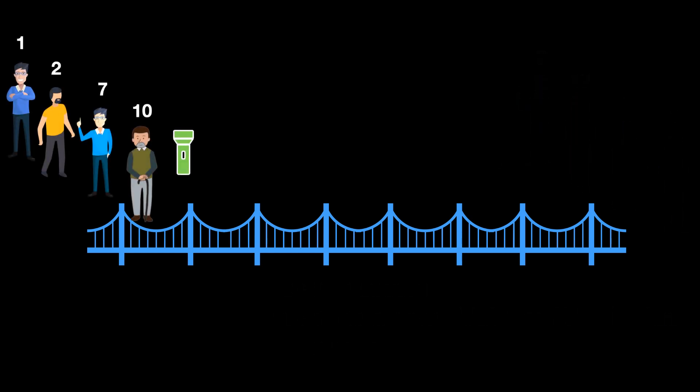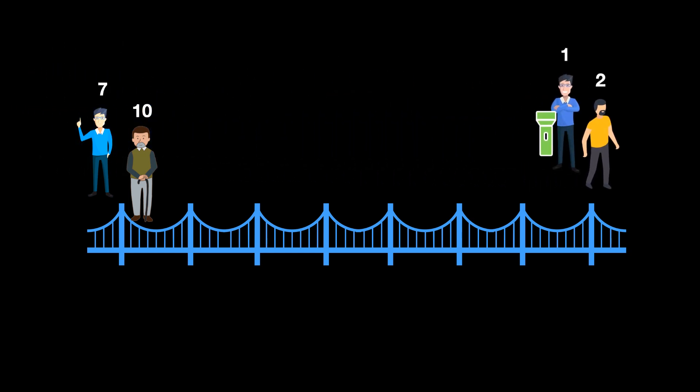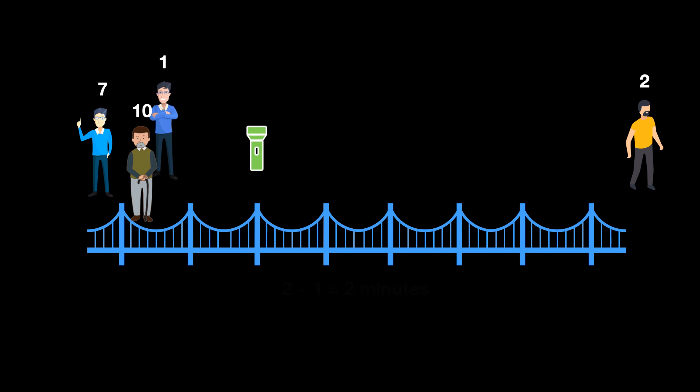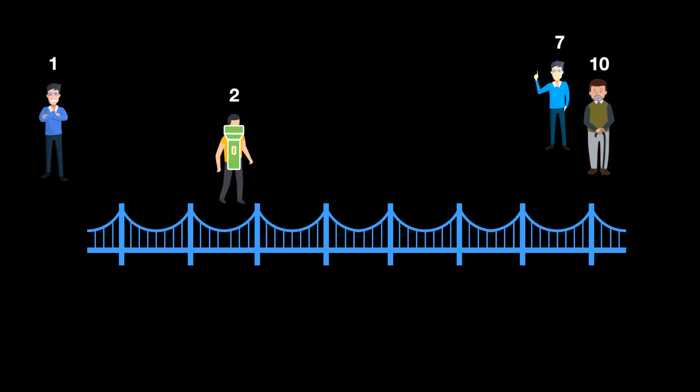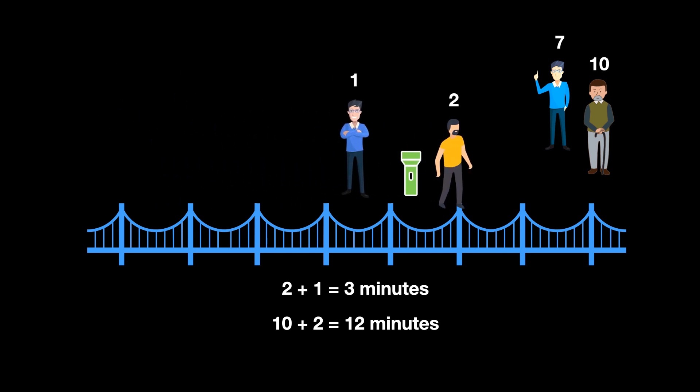Alternatively the same time can be achieved like this: 1 and 2 go first, then one comes back, then seven and ten goes and two comes back, then 1 and 2 go again. It makes a total of 17 minutes.